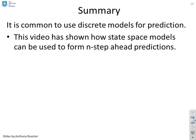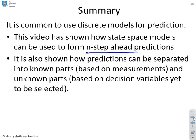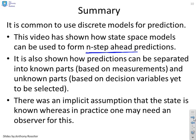In summary, it's common to use discrete models for prediction, and this video has shown how state-space models can be used to form n-step-ahead predictions. It's also shown that predictions can be separated into known parts based upon measurements and unknown parts based on decision variables that have yet to be selected. It was an implicit assumption here that the state is known, so we assume that x_k was known. Of course, in practice, you'll probably have an observer in order to estimate this.